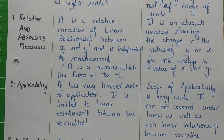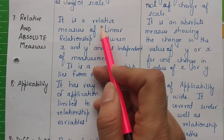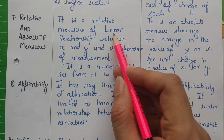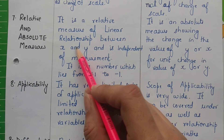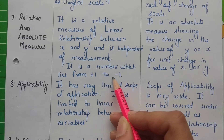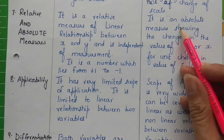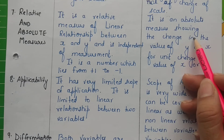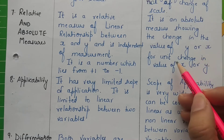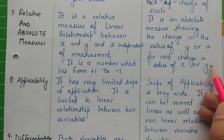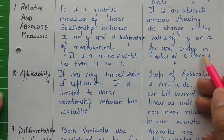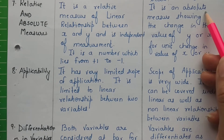Next: relative and absolute measures. Correlation is a relative measure. It checks the linear relationship between x and y and is independent of measurement units. Its value ranges from minus 1 to plus 1. But regression is an absolute measure. It shows the change in the value of y for a unit change in the value of x, or the change in x for a unit change in y. It tells you exactly by how much y will change when x changes — it is an absolute measure.